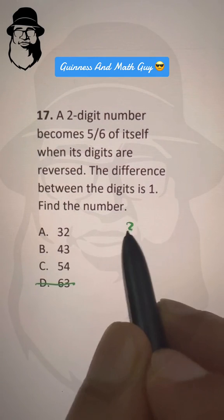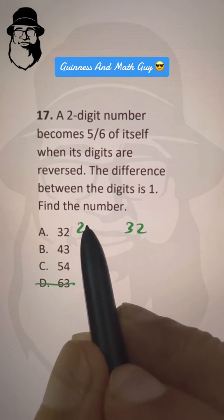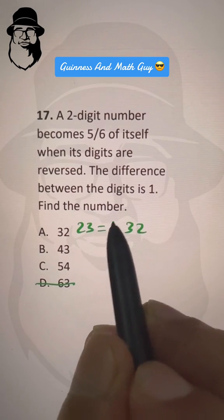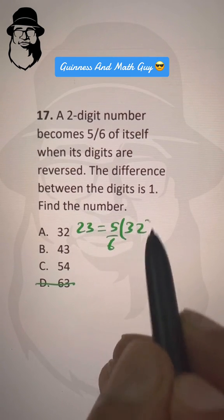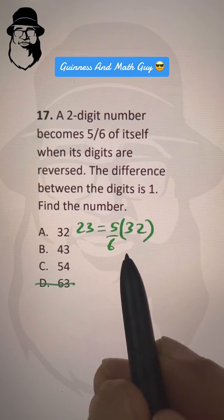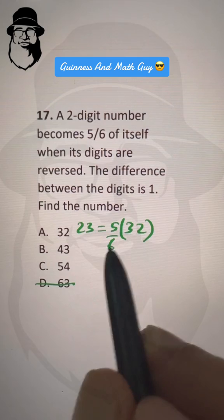If the digits of 32 are reversed to make it 23, it becomes 5/6 of itself, right? But if we do the same thing with 43 - 32 is not even divisible by 6, so the answer will be in points and they are not equal.